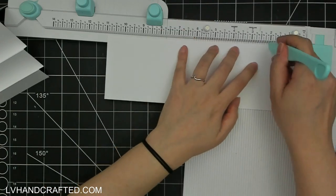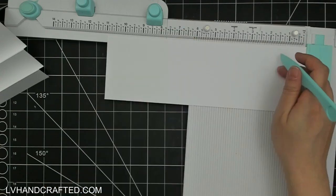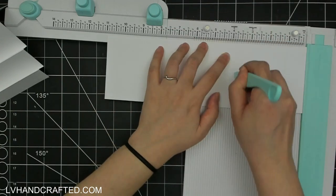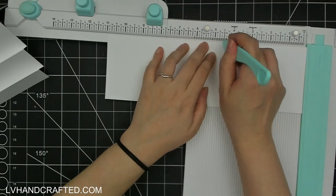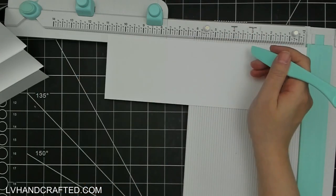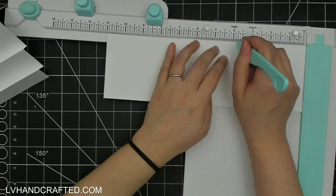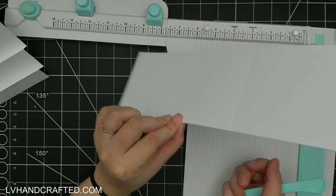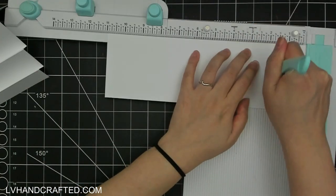My first scoreline is at one inch. The next is at two. Then at three and three quarters. Four and a half. And finally seven and one quarter. Or you can flip to the other end and score three and three quarters of an inch.